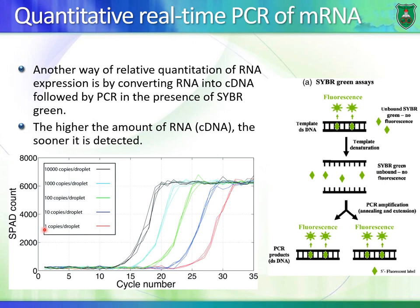All samples would be amplified: 1 becomes 2 after a cycle, then 4, 8, 16, and so on; 10 doubles to 20, 40, 80, 160; and the same for 100 and 1000. They all eventually reach the detection threshold — say, 100,000 copies. The sample with 10,000 copies of cDNA reaches the threshold first, detected at, say, cycle 12 or 13. Then the second sample is detected, then the third, and so on.